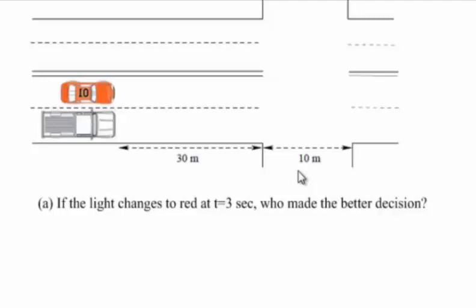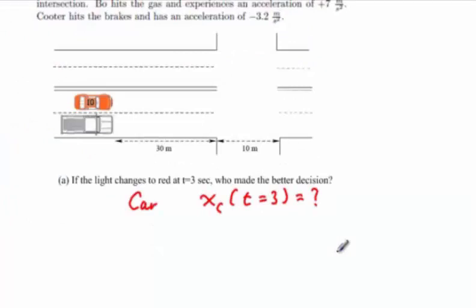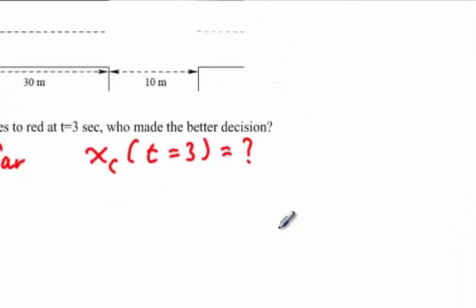So, in the case of the car, we formulate the question. The question is, where is the car, that is the x location of the car, under the condition t equals 3 seconds. As indicated by the question, we need to call upon a relationship between position and time. That relationship is this one.